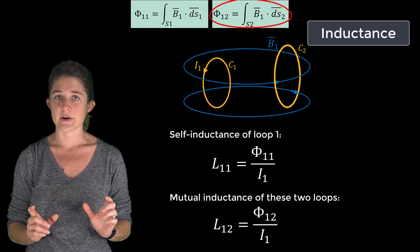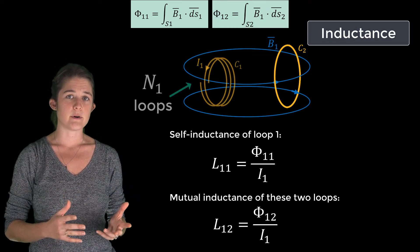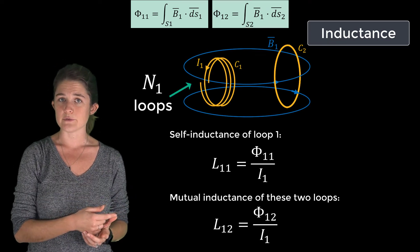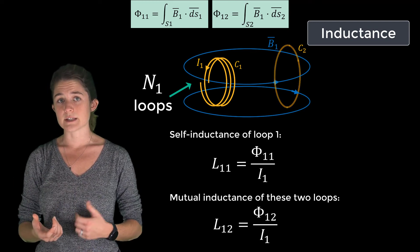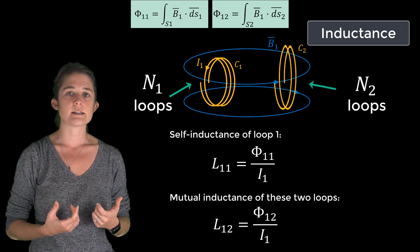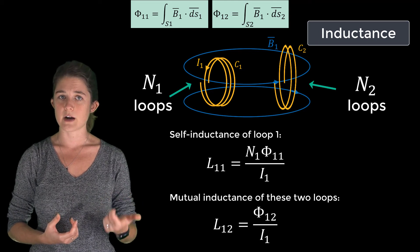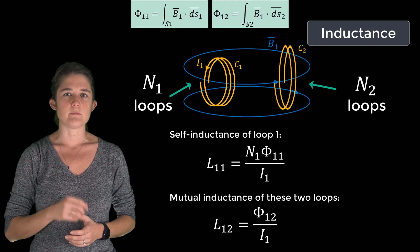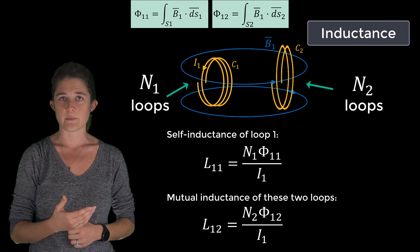If instead of a single loop, C1 is composed of a coil of N1 loops all carrying the same current, and C2 is similarly composed of N2 loops, then the self-inductance of the first loop will scale by N1 and become N1Φ11 over I1. Similarly, the mutual inductance will become N2Φ12 over I1.